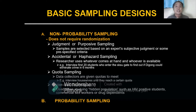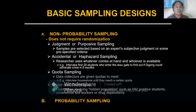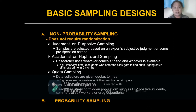The second type is accidental or haphazard sampling, meaning the researcher uses whatever comes at hand and whoever is available. For example, you are going to interview the first 20 persons in your school about the president — that is an example of accidental or haphazard sampling.